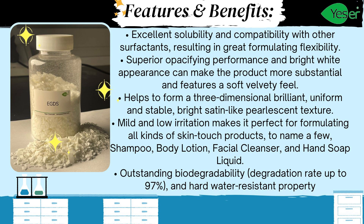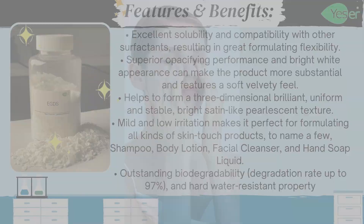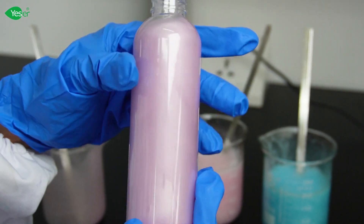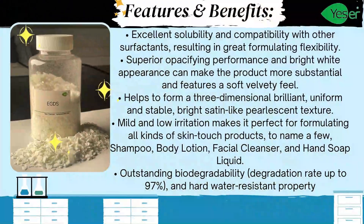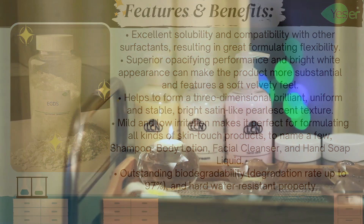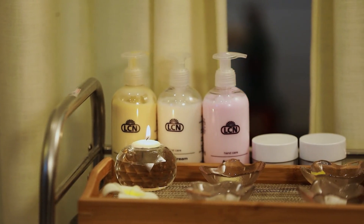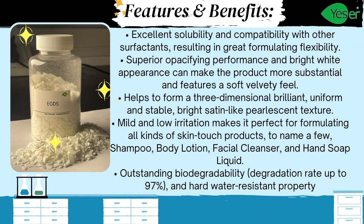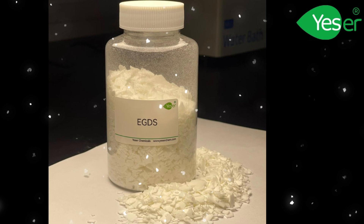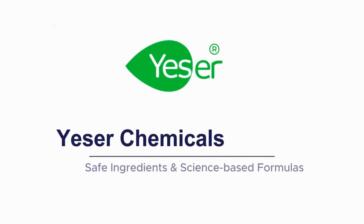EGDS has superior opacifying performance and bright white appearance, making the product more substantial with a soft, velvety feel. It helps form a three-dimensional, brilliant, uniform, and stable bright satin-like pearlescent texture. It is mild and low irritation, making it perfect for formulating all kinds of skin-touch products — shampoo, body lotion, facial cleanser, and hand soap liquid. Lastly, it has outstanding biodegradability with a degradation rate up to 97%, and a hard water resistant property.